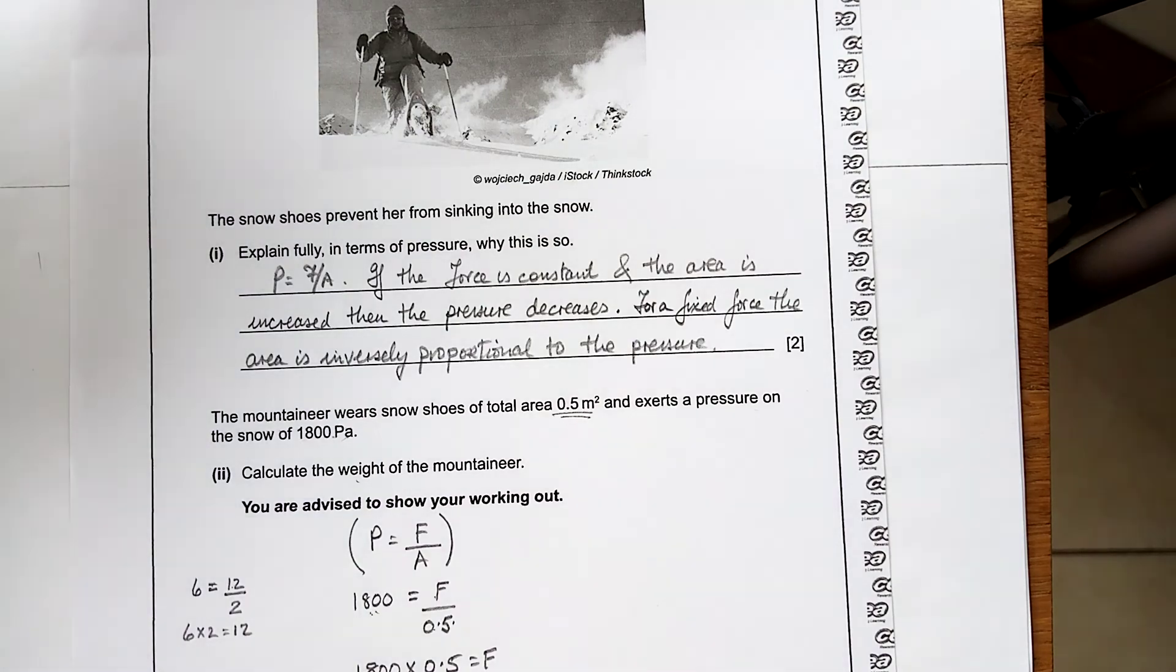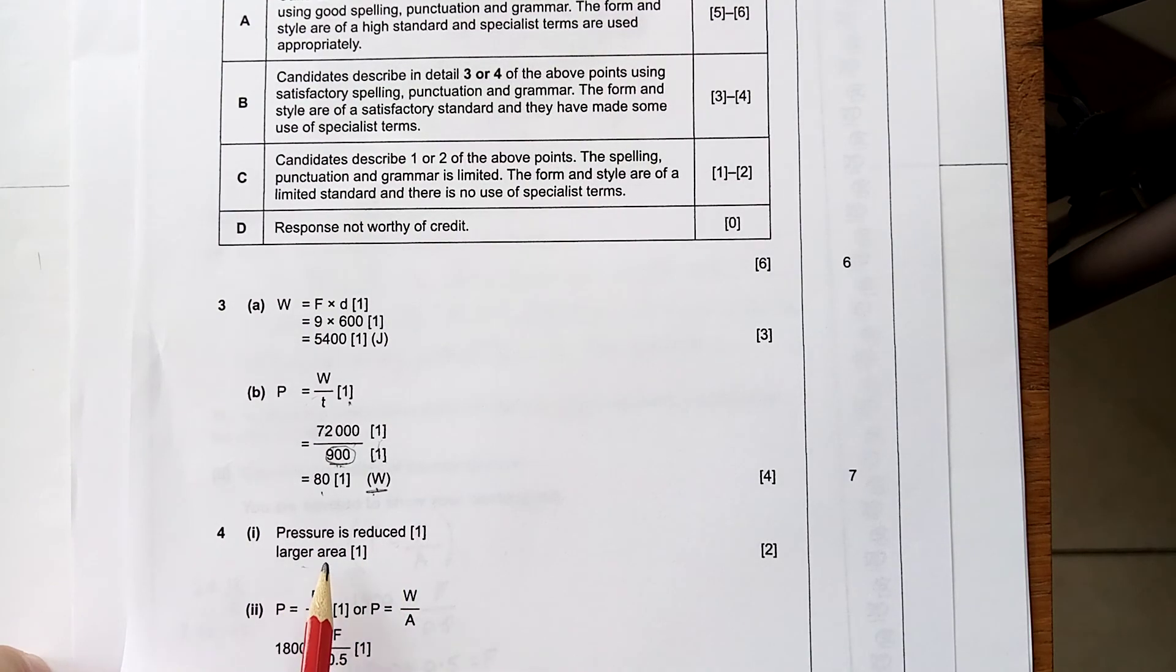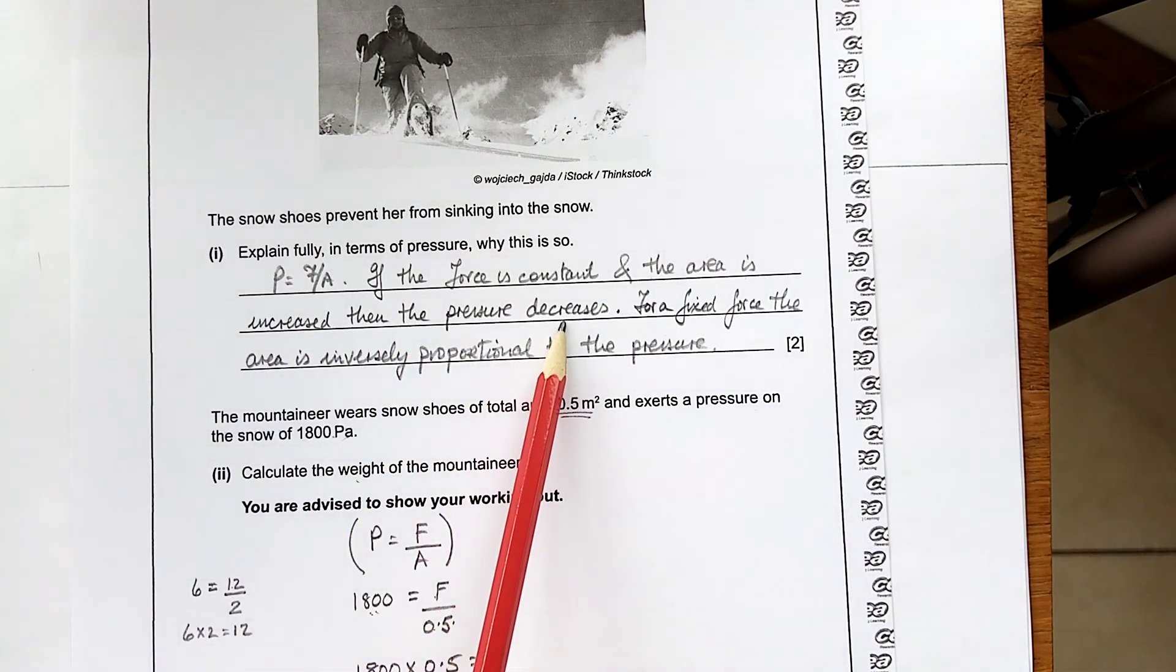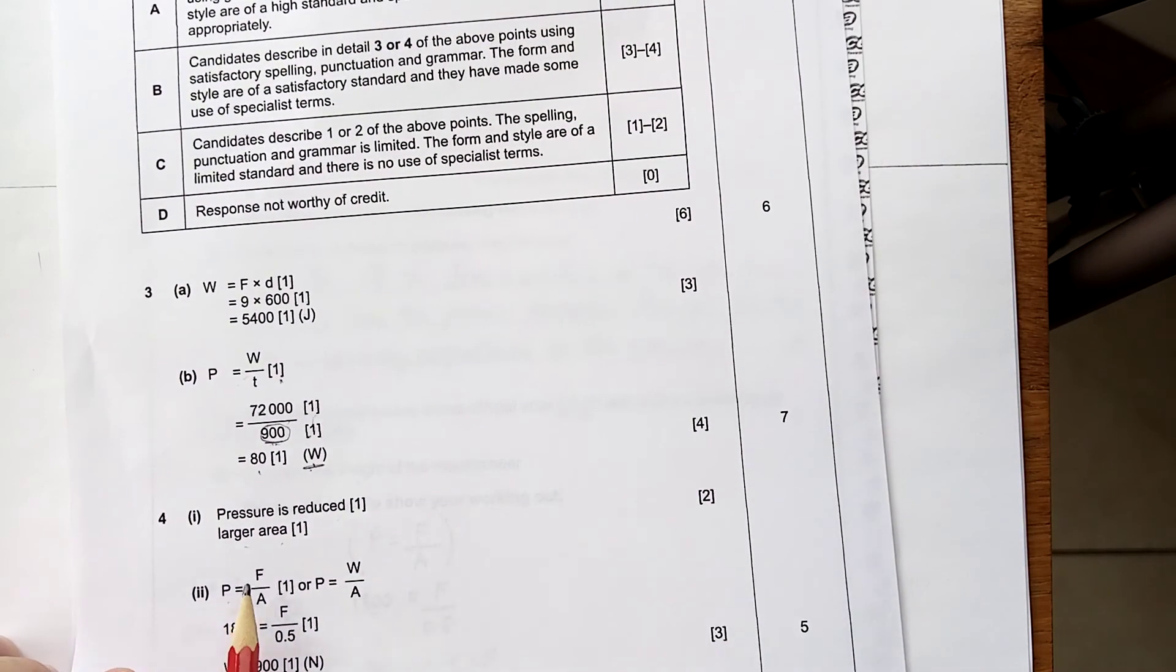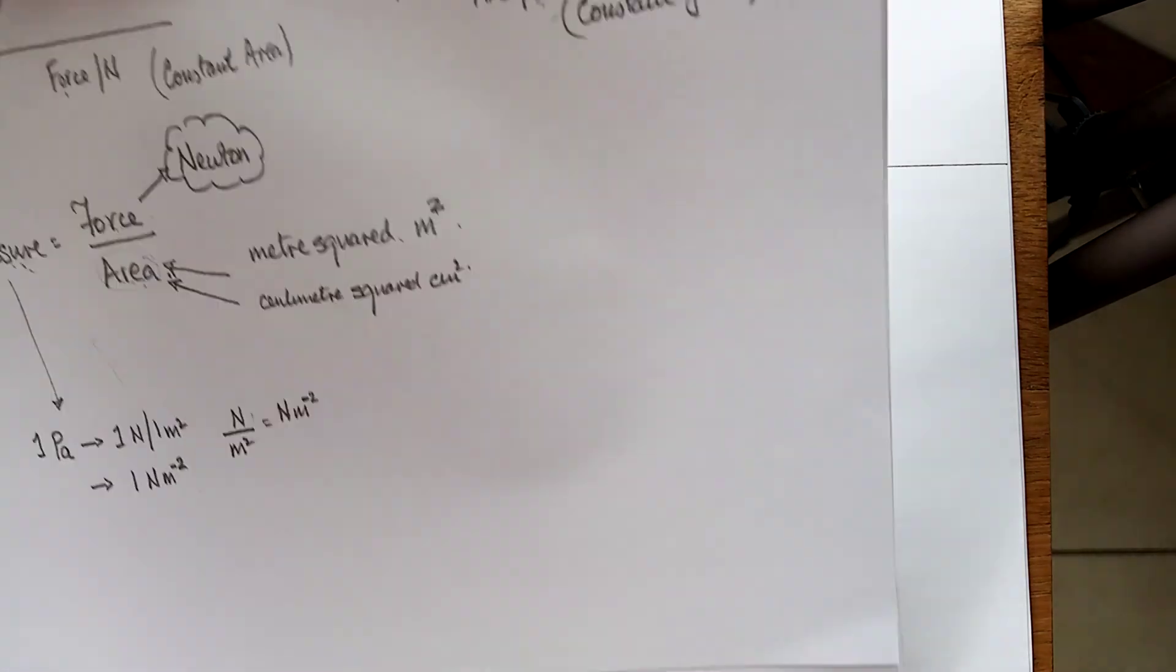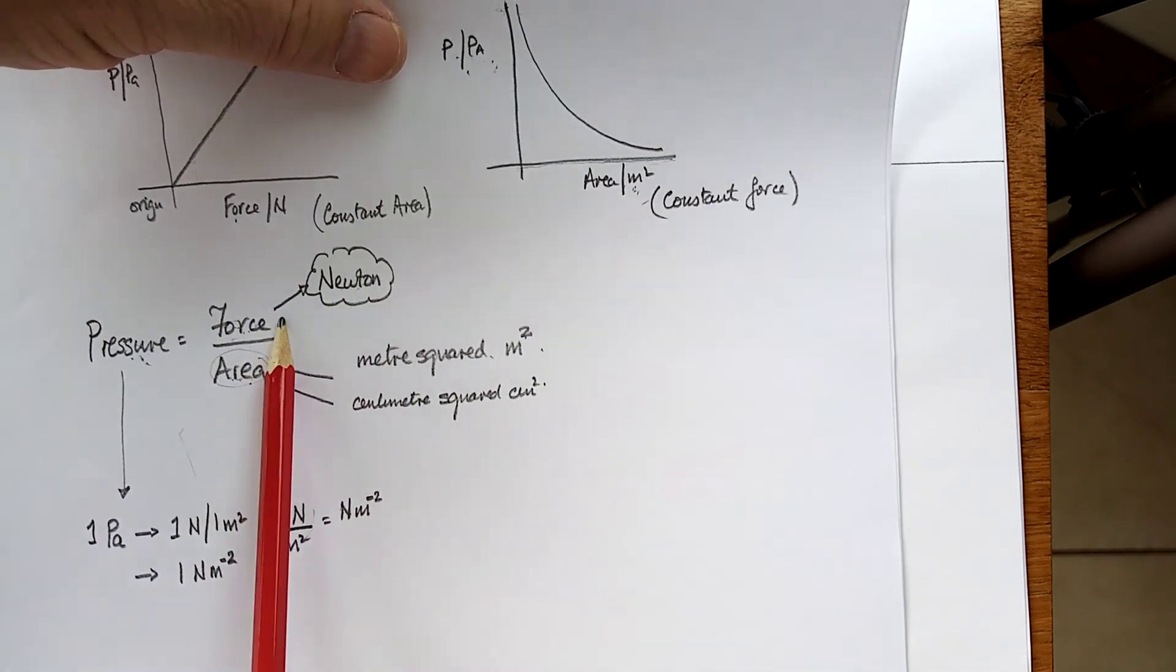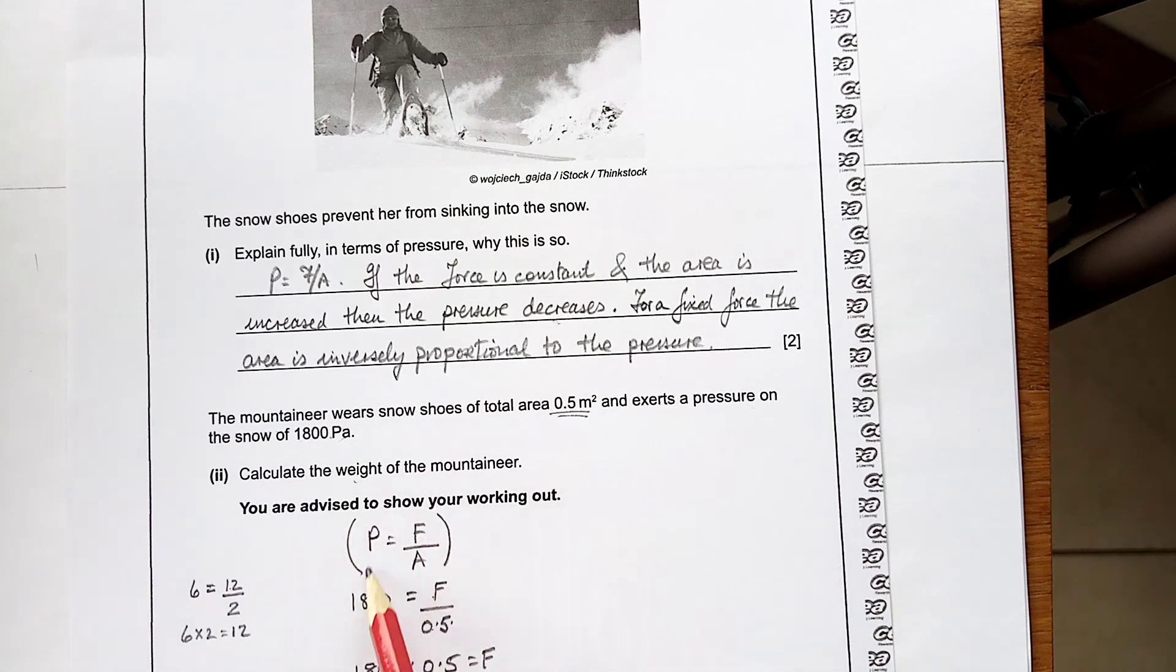So, let's have a quick look at the mark scheme. The first one I said here. Pressure is reduced, larger area. The area is increased, then the pressure decreases. See that? P equals F over A. Now, they're also given W over A. But, again, if we went back to our mind map, force is in newtons and weight is in newtons. So, it's the same thing. So, put them all in and you get your answer of 900 newtons.